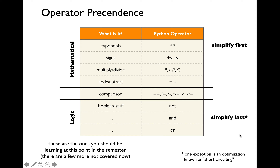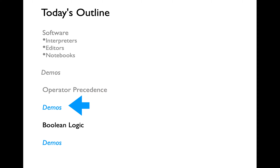One exception to simplifying last would be something known as short-circuiting — I'll be talking about short-circuiting as part of Wednesday's lecture. In the next video I'll be going through various other data types and we'll go through more examples.